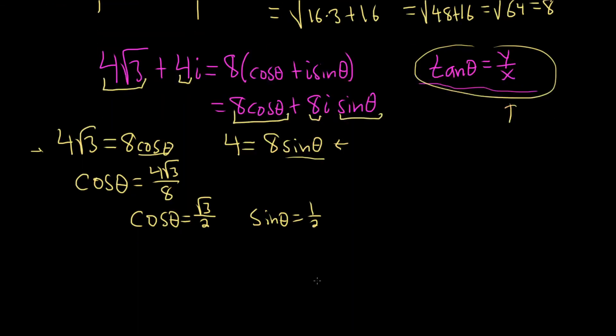And this is one of those special angles, and that angle is theta equals pi over 6, just from memory. So if you memorize the ones for sine and cosine, you can always do it this way. So there's our theta.